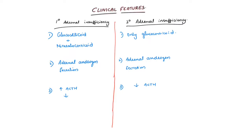Before going to clinical features in detail, let us see the main differences between primary and secondary adrenal insufficiency. In primary adrenal insufficiency, both glucocorticoid and mineralocorticoid secretion are affected. In secondary adrenal insufficiency, the pituitary and hypothalamus are damaged, but the adrenal gland is intact — so the RAS system is intact — and that is why they usually don't have any mineralocorticoid deficiency. They manifest only symptoms of glucocorticoid deficiency, whereas in primary, the adrenal gland itself is defective, so there is deficiency in both mineralocorticoid and glucocorticoid.